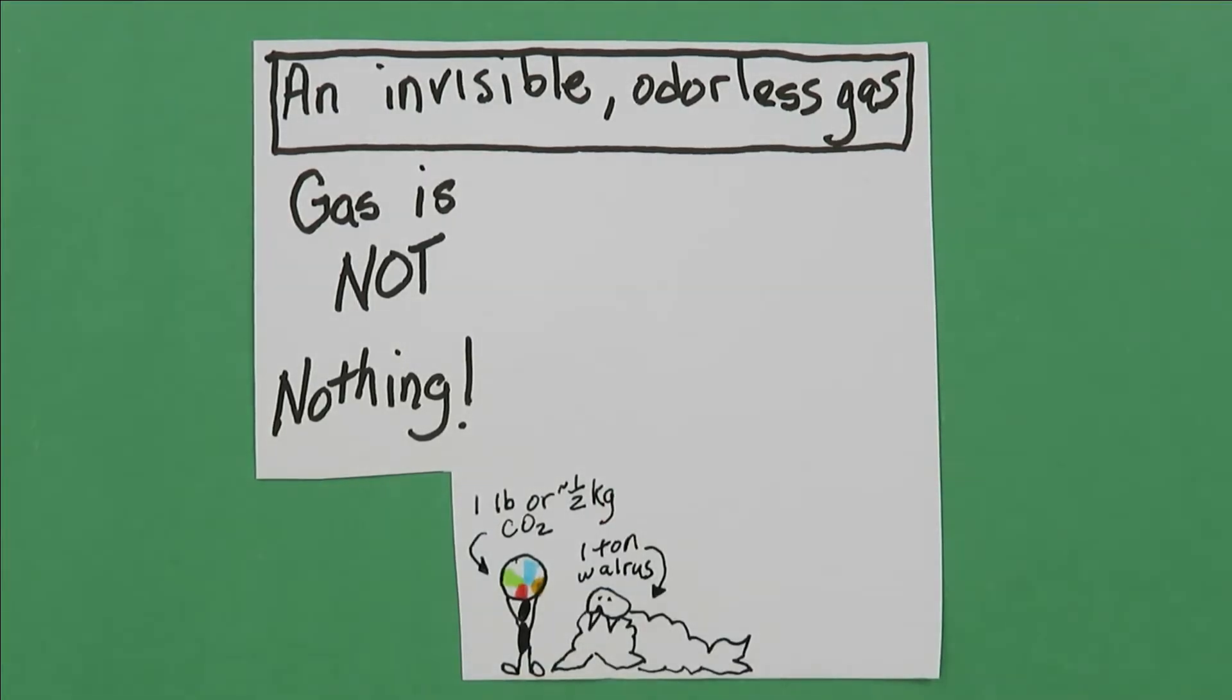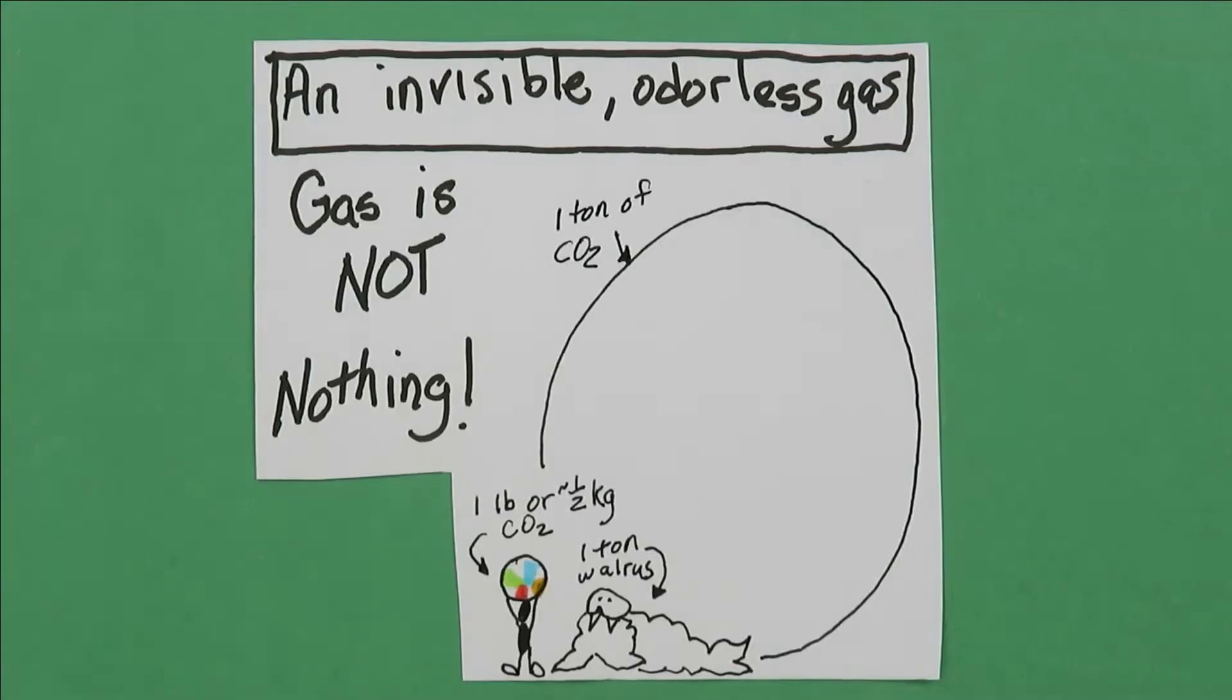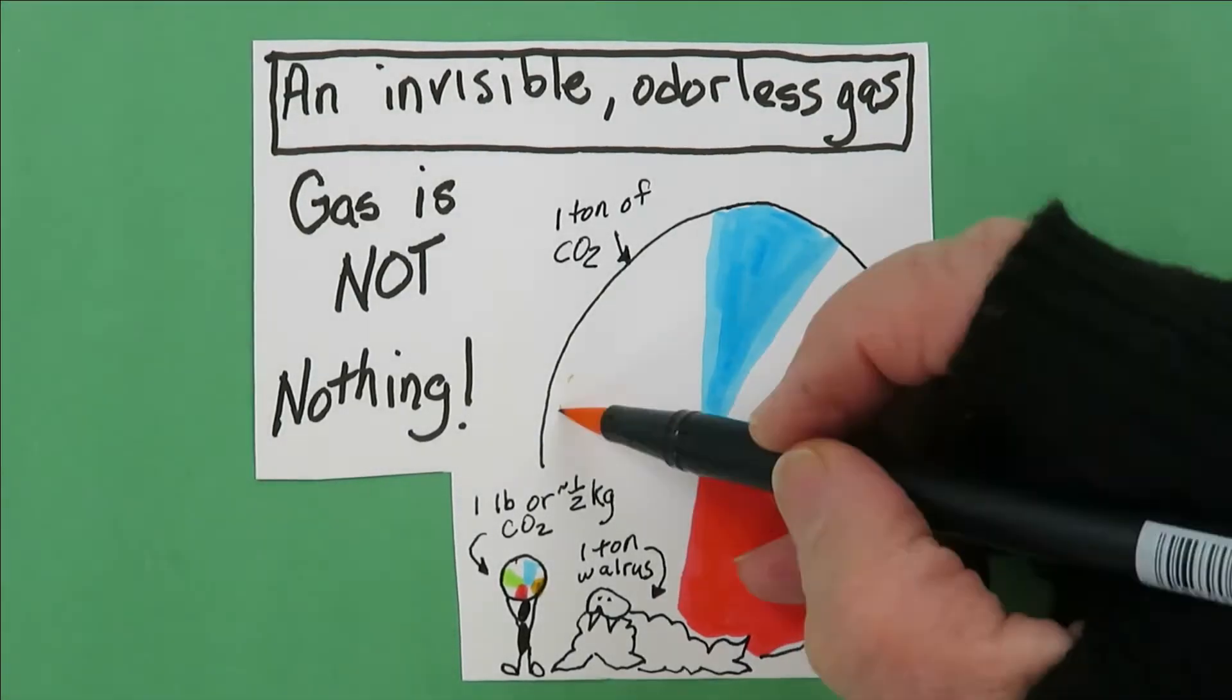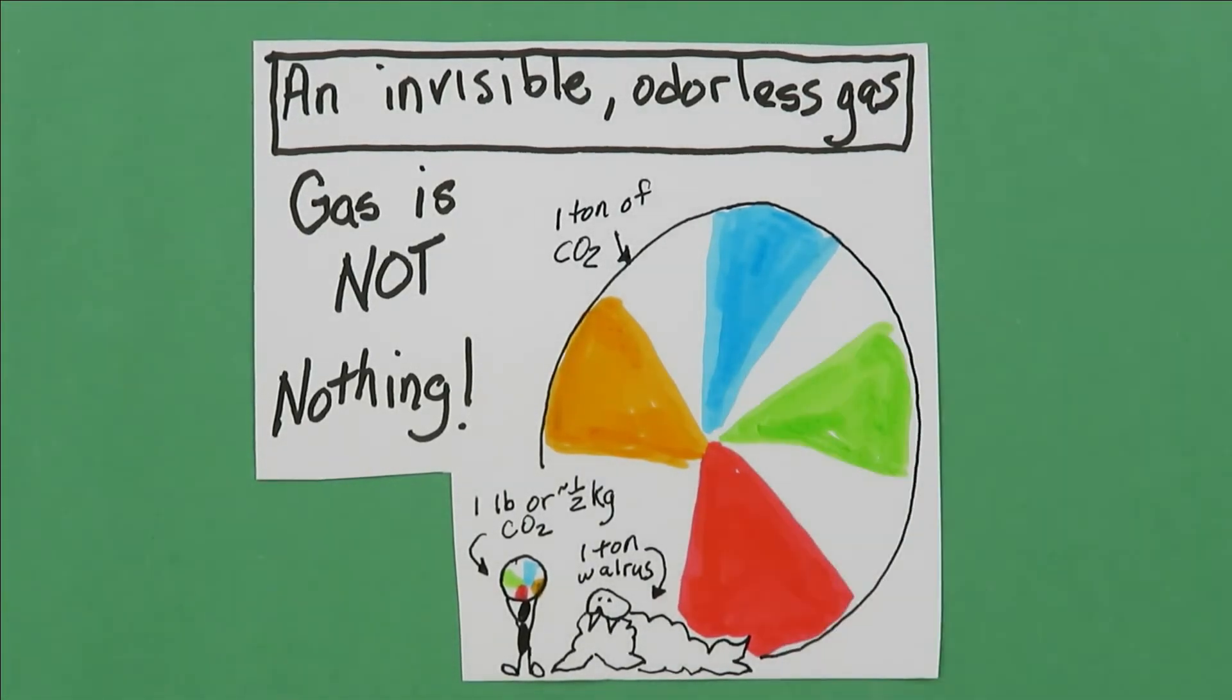A ton of CO2, the same weight as a walrus, would fill a beach ball 32 feet high. That's almost 10 meters high.